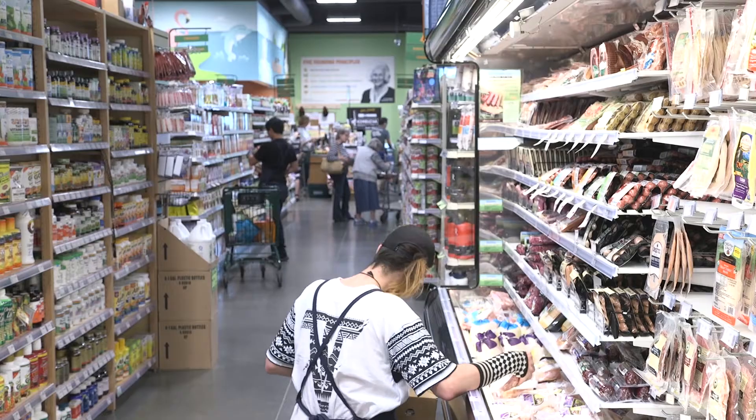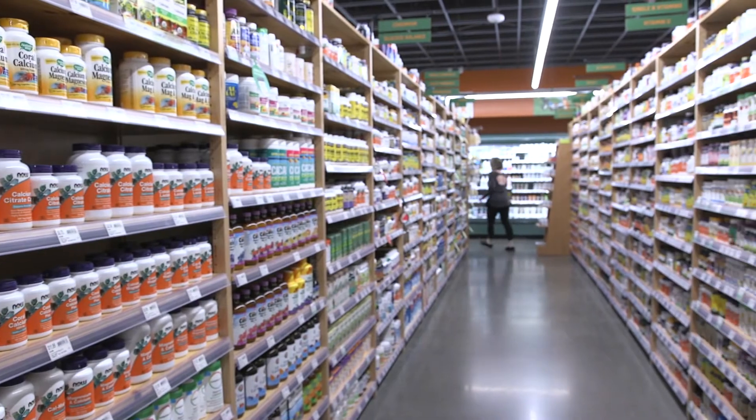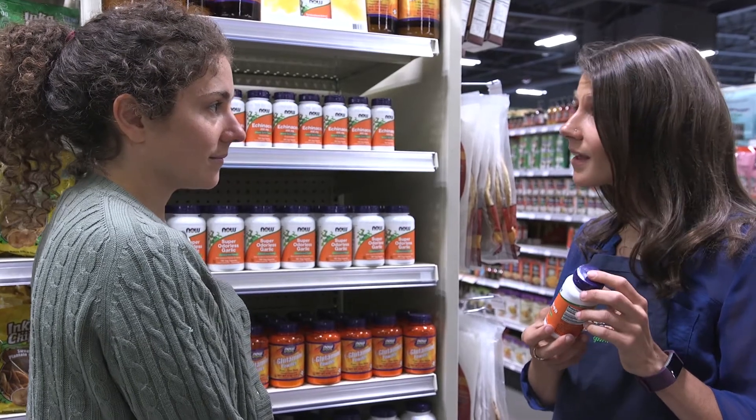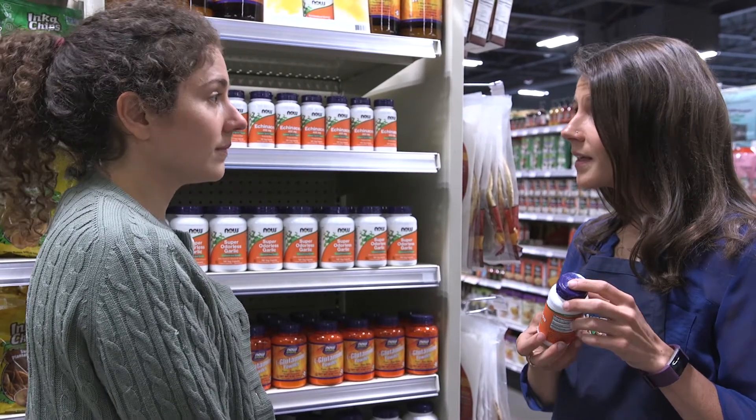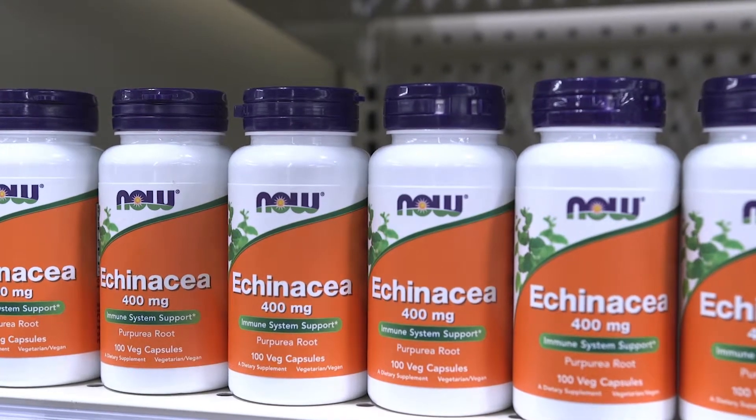I think consumers demand quality products, but Natural Grocers also demands quality products for our consumers. So one of our five founding principles here is commitment to quality. Now with their robust standards and quality practices, they help us meet that commitment in our five founding principles.